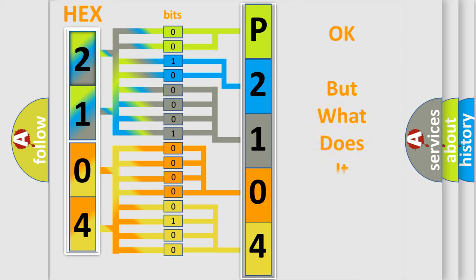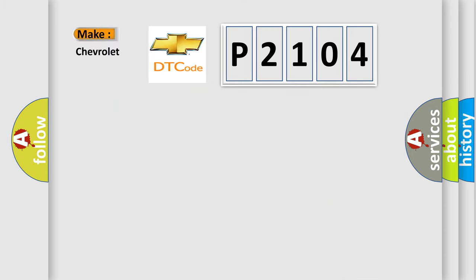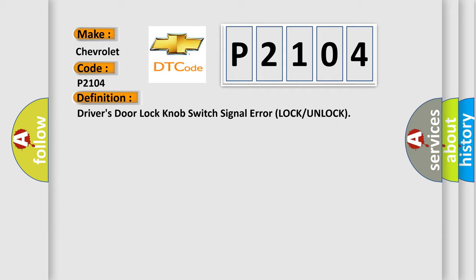The number itself does not make sense to us if we cannot assign information about what it actually expresses. So, what does the diagnostic trouble code P2104 interpret specifically for Chevrolet car manufacturers? The basic definition is driver's door lock knob switch signal error lock or unlock.